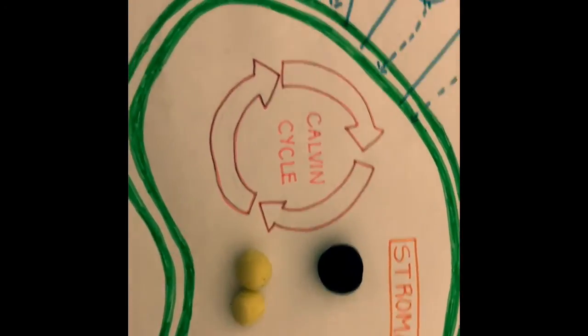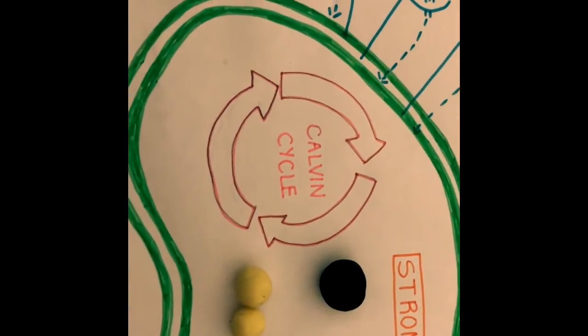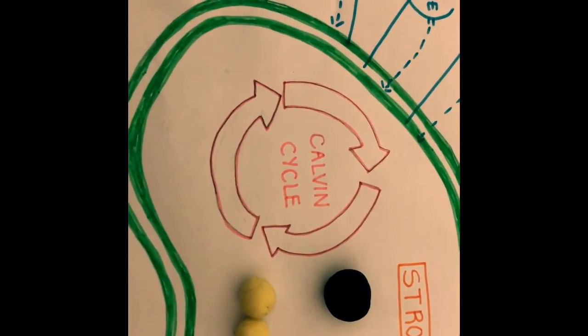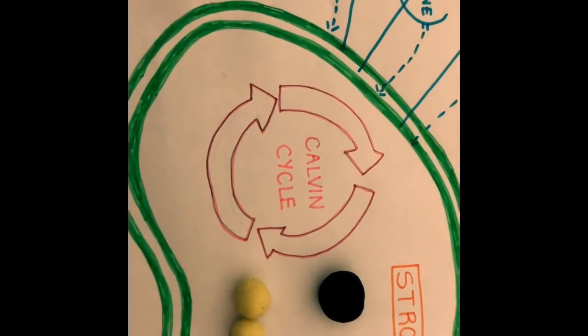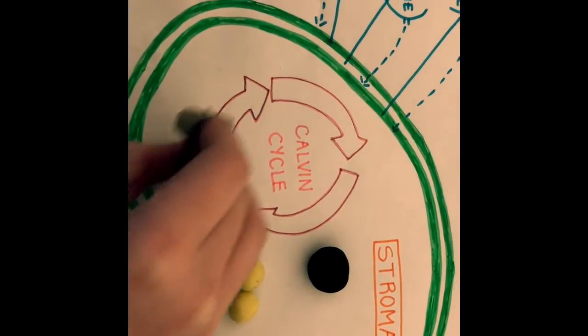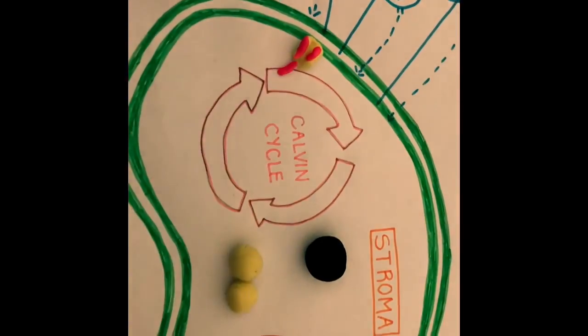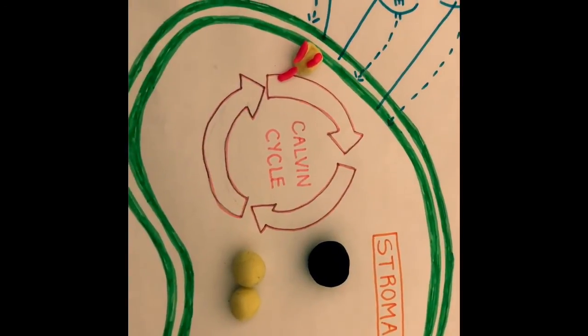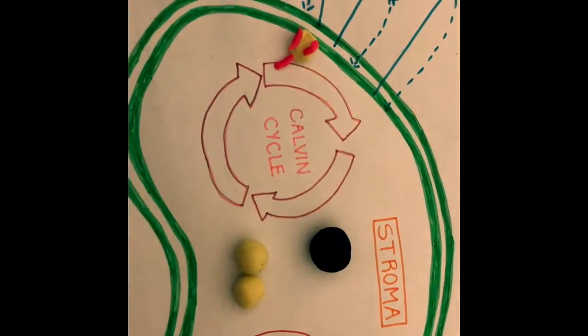Three molecules of ATP are used in the third stage of the Calvin cycle, and the final product of the Calvin cycle is glucose.